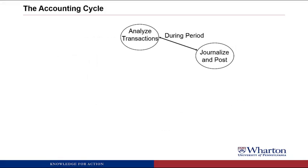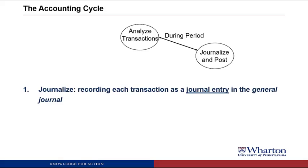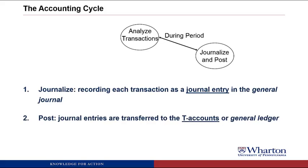We're going to start the case with the first part of the accounting cycle where we analyze transactions and then figure out how to journalize them — that is, record each transaction as a journal entry in the general journal. Then we're going to post that journal entry to T-accounts or the general ledger, where we'll keep a running total of the balance in all the accounts.